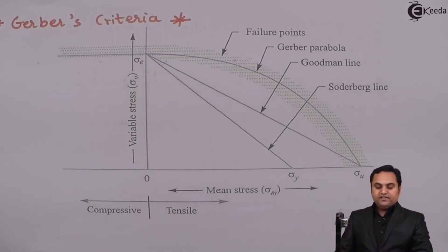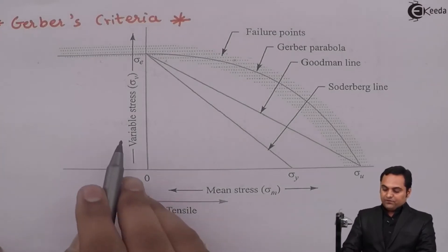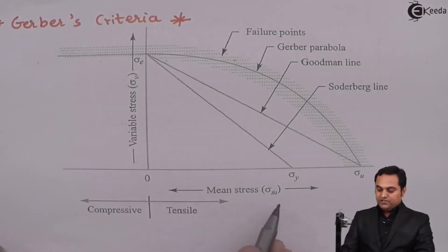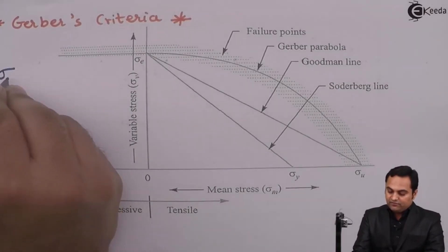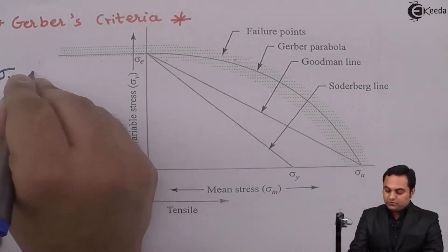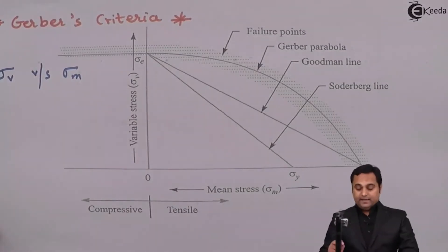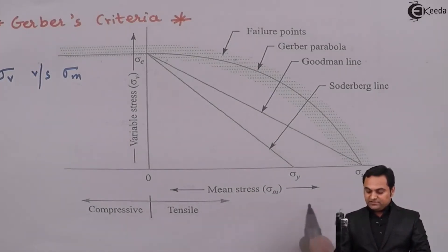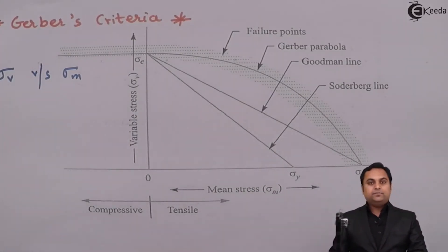Gerber's criteria can be understood as a graph of variable stress sigma_v versus mean stress sigma_m. It is basically a graph of variable stress versus mean stress, and on this graph the stresses on the positive x-axis are tensile and the negative x-axis represents compressive stress.